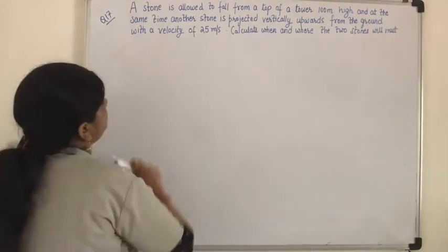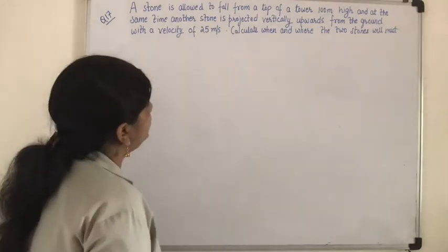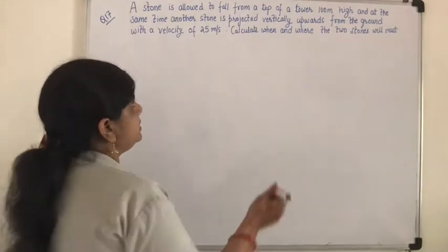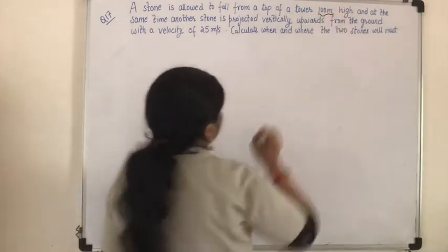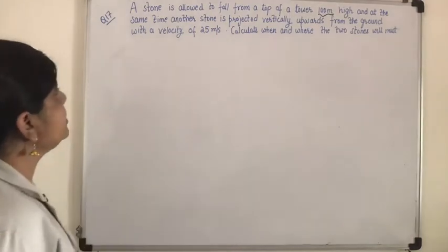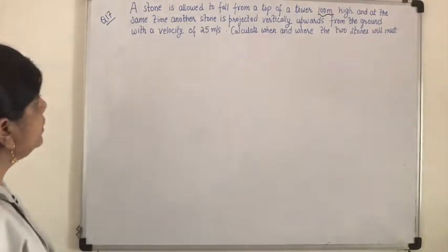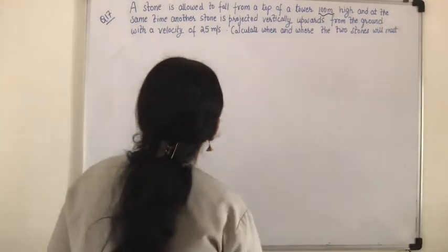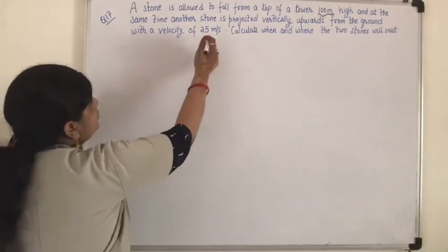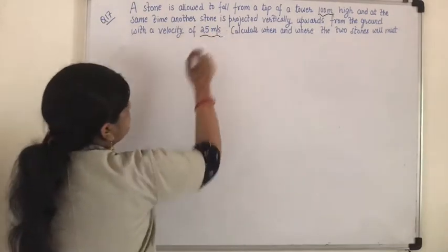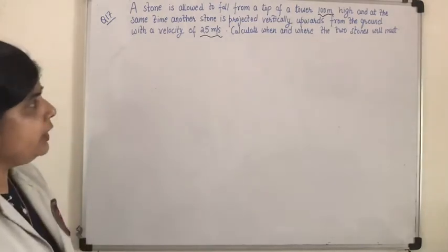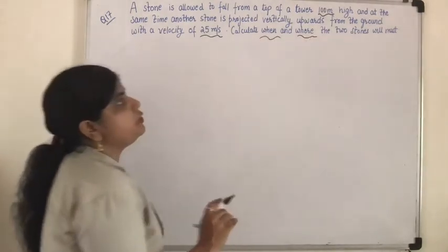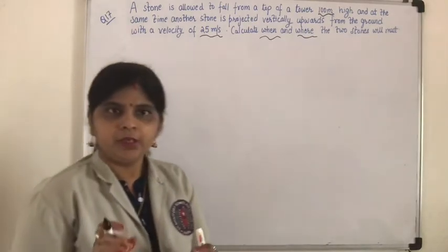So a stone is allowed to fall from the top of a tower 100 meters high, and at the same time another stone is projected vertically upwards from the ground with a velocity of 25 meters per second. Calculate when and where the two stones will meet.